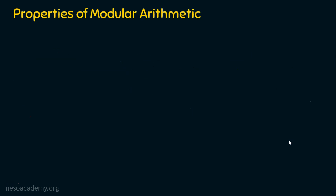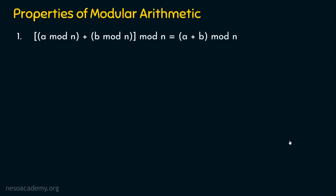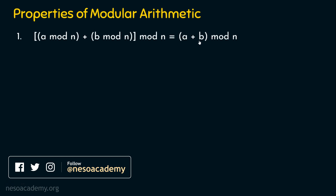Let's dive into the topic of the day: the properties of modular arithmetic. We have three basic properties. The first property is: (a mod n + b mod n) mod n = (a + b) mod n. Here we have a mod n and b mod n, and together mod n. This big expression can be simplified as: just add a and b, then perform mod n. Whatever result we get from one approach, we will get the same result from the other.